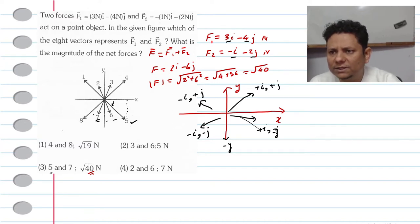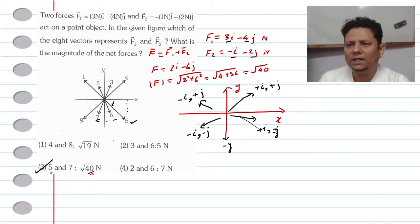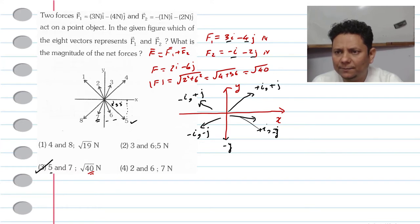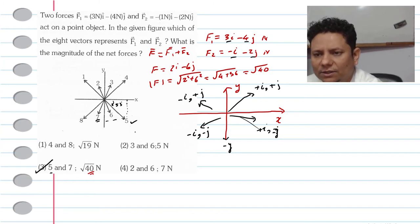Because if it is 3 or 4 representation, it will be 1 or 2 representation. So that means option number 3 would be the right answer. Although I would say that 5 would be the right answer. Option number 3 would be the right answer for this problem.